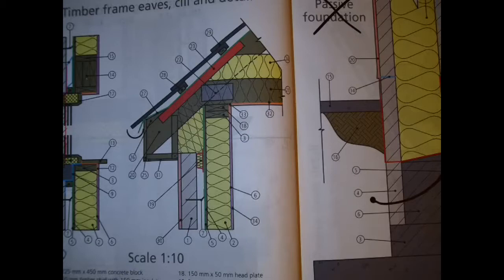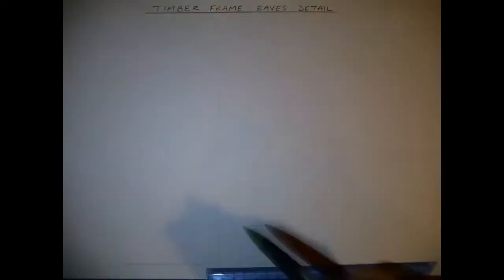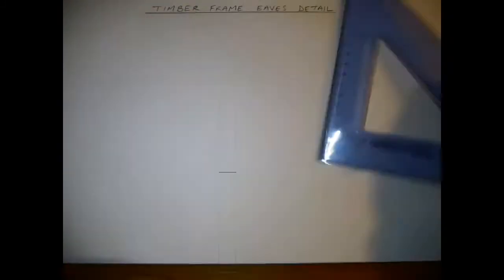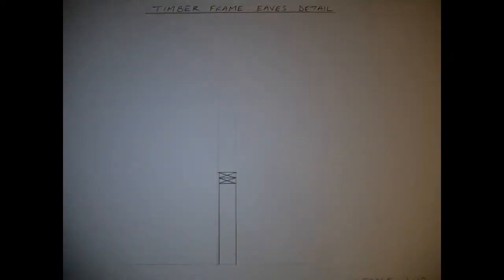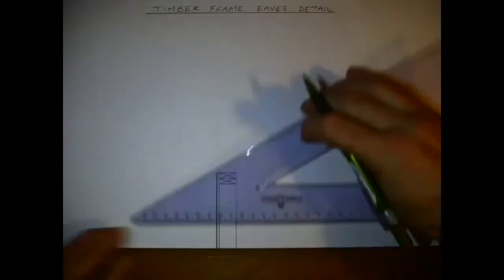To start off with, I'm going to draw just the stud and the OSB board and breather membrane, and I'm going to draw that to a height of 85mm in a scale of 1 to 10. I'm going to draw my header and binder at the very top of the stud.